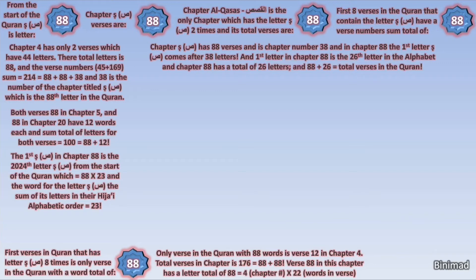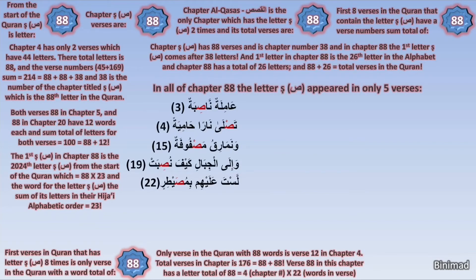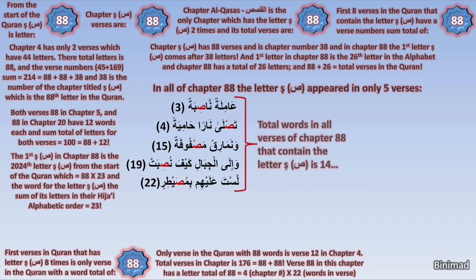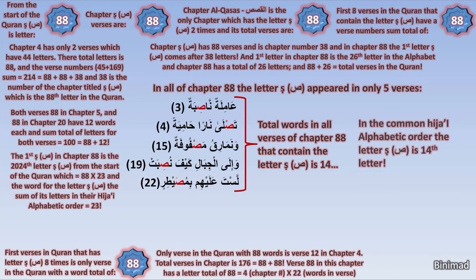But let's keep going. In the entire chapter 88, the letter Saad appeared only in five verses, once in each verse. The total number of words in all the verses of chapter 88 that contain the letter Saad is 14 words. The letter Saad is the 14th letter in the common Hijai alphabetic order.